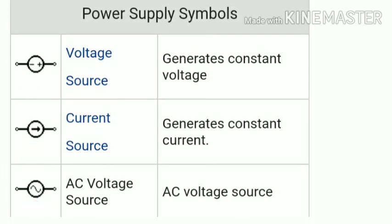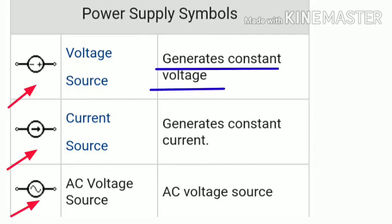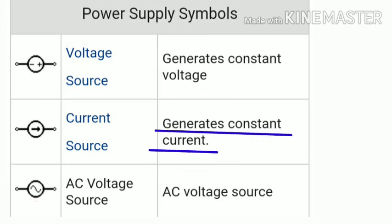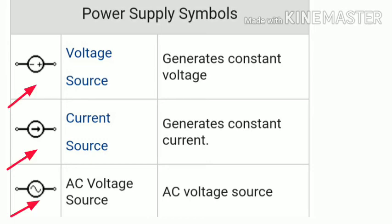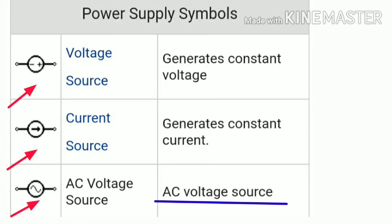The next symbol is the power supply symbol — which includes the voltage source, current source, and AC voltage source. The voltage source is used for generating voltage. The AC voltage source generates AC, while the DC voltage source generates DC. These are very common symbols in electrical engineering, used as constant generating sources.